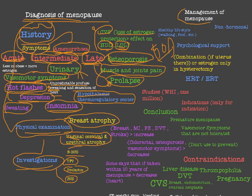Now let's move to the management of menopause. The first line is lifestyle modification: walking is the best exercise after menopause, along with healthy eating. The second line is psychological support, because depression and insomnia are prominent symptoms of menopause and the patient needs psychological support.